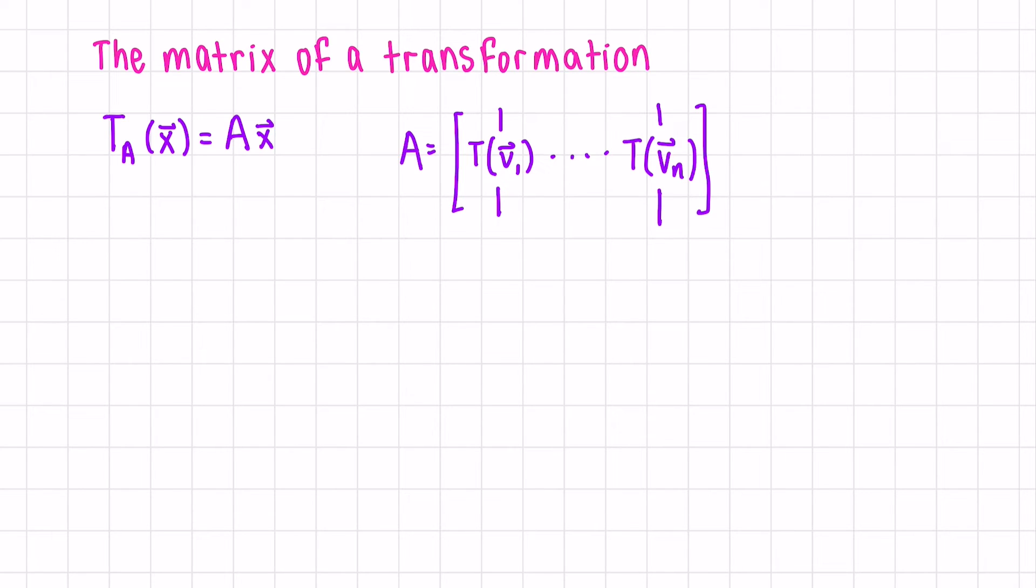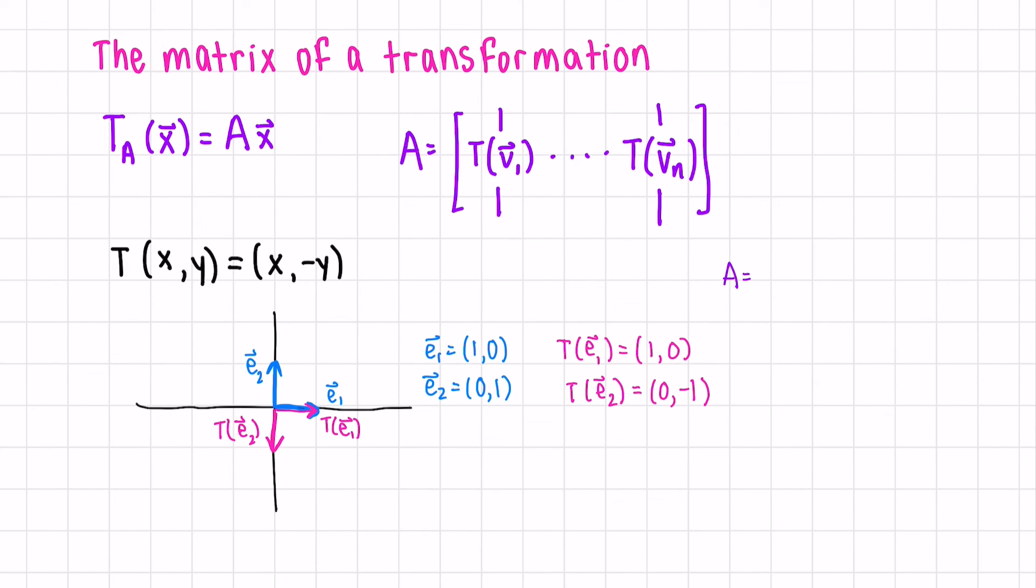Let's look at a concrete example. The transformation of XY to X negative Y. This is a reflection in the X-axis. Our basis vectors for R2 are E1 and E2, where E1 is 1, 0, and E2 is 0, 1. Let's see what happens when we apply this transformation. Since this is a reflection along the X-axis, we can do this graphically. We see that E2 is reflected and points straight down. On the other hand, our other basis vector remains unchanged. So our matrix of the transformation will be 1, 0, 0, negative 1.